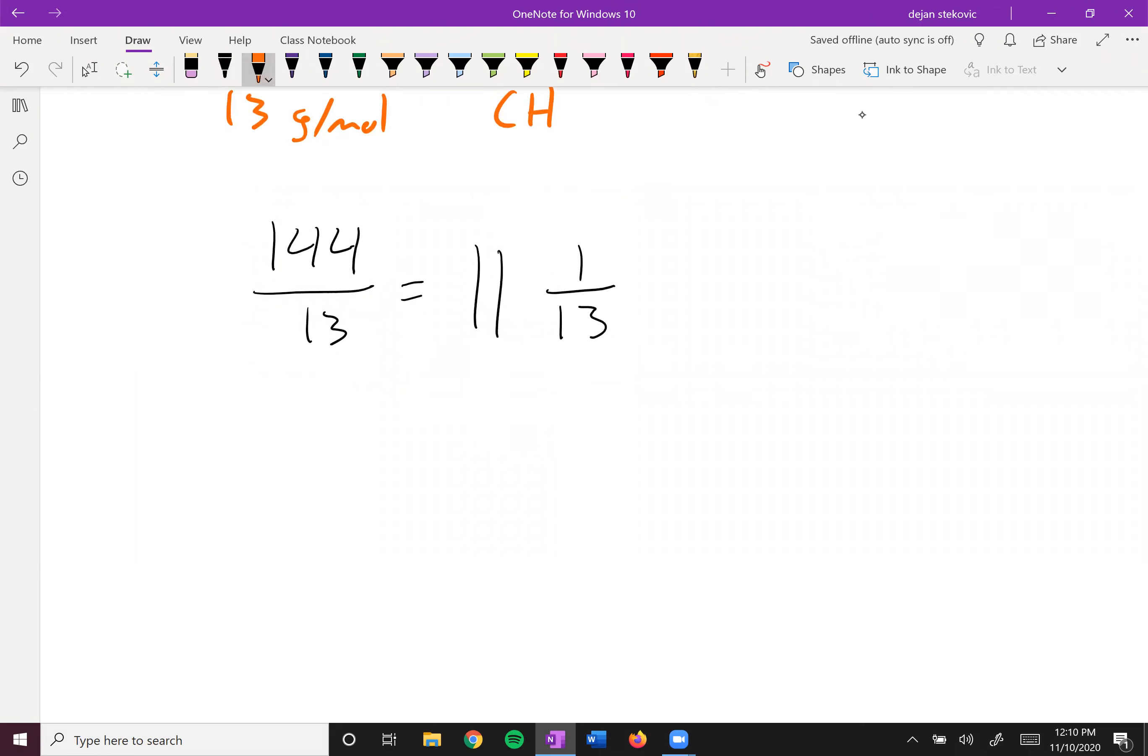And so what this 11 tells you is that you have or could have 11 CHs. And what this remainder of one tells you is that it could be one extra H. And so your formula, you could have C11H12. That is a molecular formula that would add up to a mass of 144 grams per mole. That does not mean that that's the formula of your compound, but it's just a good starting point. It gives you some options to think about.